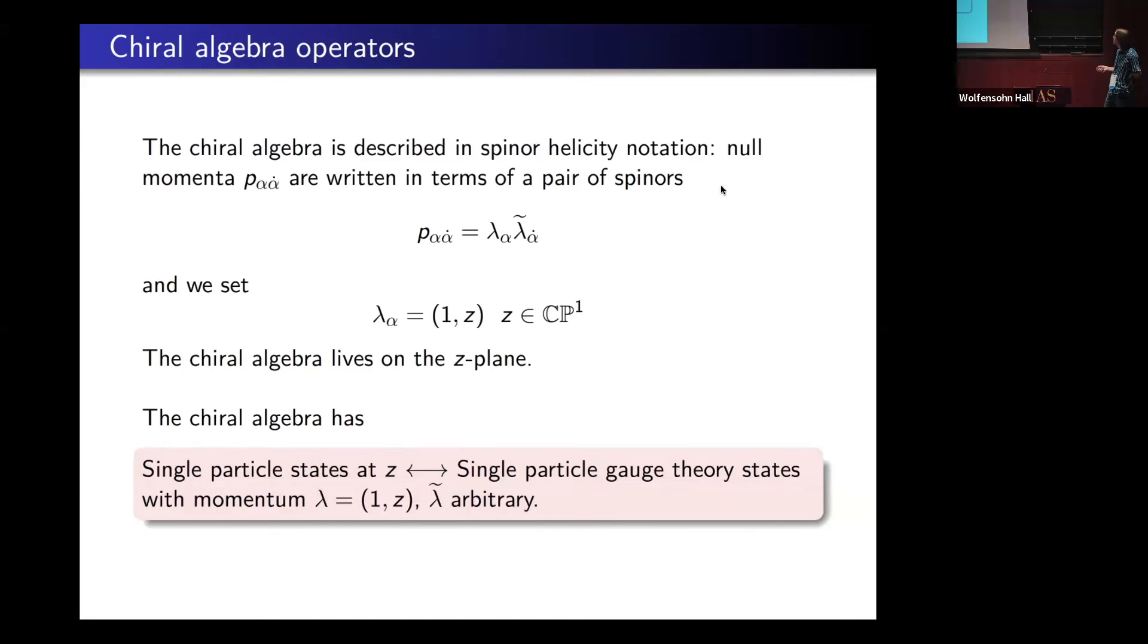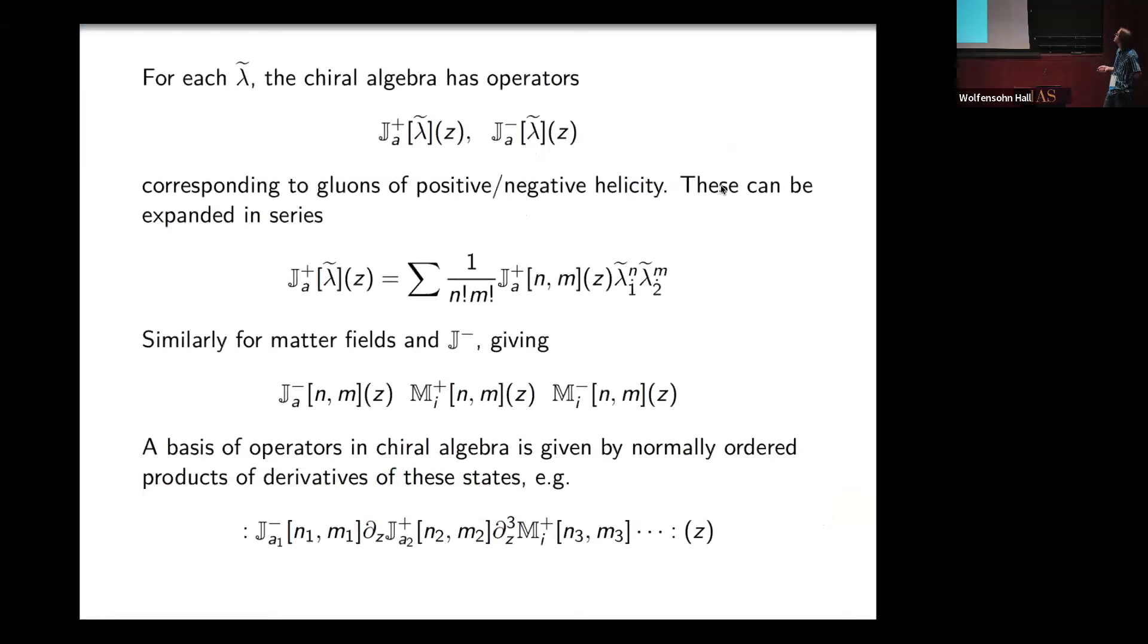States or operators of the chiral algebra, at this point on the plane where it lives, will be gauge theory states whose momentum has lambda equals z and lambda tilde arbitrary. In other words, states of the chiral algebra are just states of gauge theory, except that part of the momentum of your gauge theory state is going to be encoded in where I am on this plane.